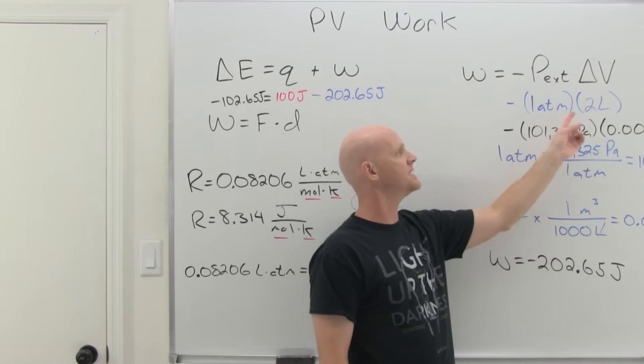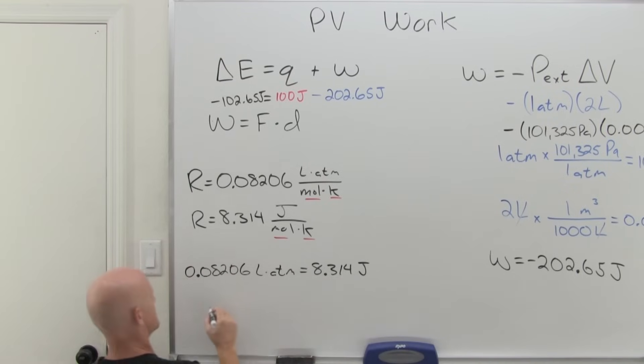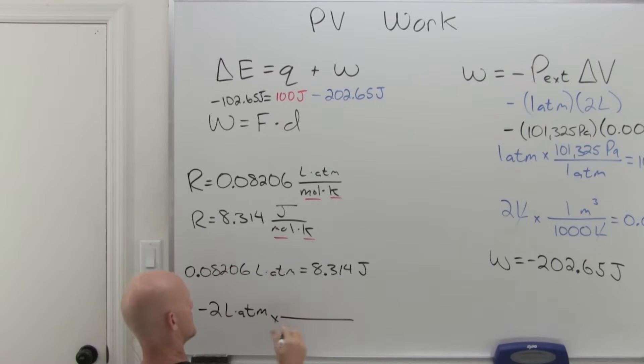And then from here, we could take and put the liter atmospheres in the denominator for dimensional analysis, make the units cancel, we'll put the joules in the numerator. And again, 8.314 joules is equal to 0.08206. Sometimes that's shortened down to 0.0821. And now we're just using it as a conversion factor. The liter atmospheres will cancel and this will get converted to joules. And lo and behold, if we've done this correctly, we should get this same answer for work here. And so if we take negative two times 8.314 divided by 0.08206, indeed, we get negative 202.63.